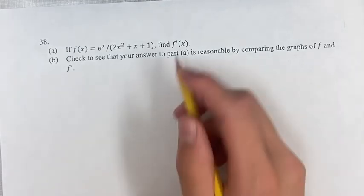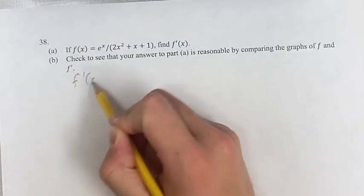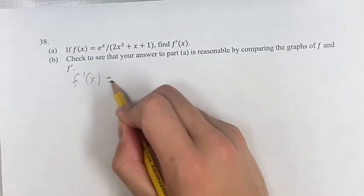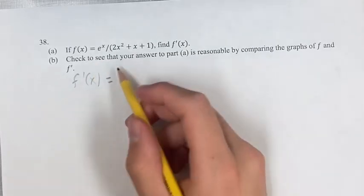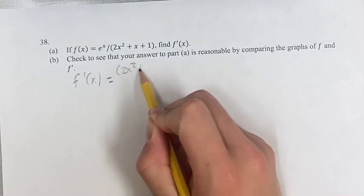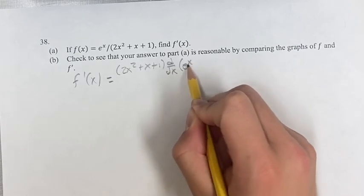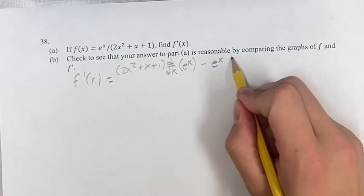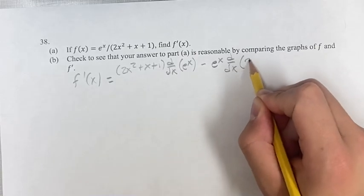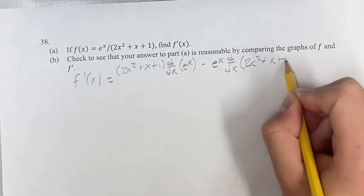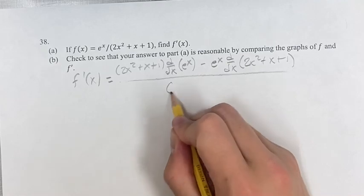The first thing we're going to do is we're going to find the derivative of x. We're going to do that using the quotient rule. Since we have a fraction here, we can start with the denominator times the derivative of the numerator minus the numerator times the derivative of the denominator all over the denominator squared.